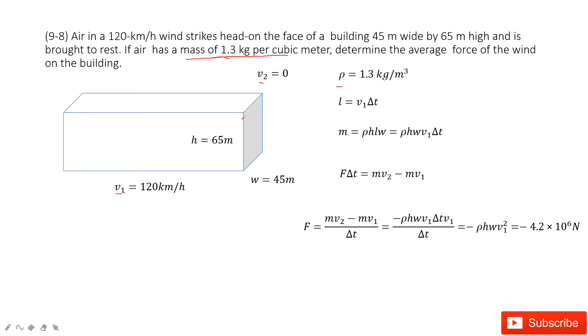And then we can see, we know how high it is, how wide it is. And for this box, we also need to find the length for this side, L. How can you find L? L is V1 times Δt. How much time it takes?